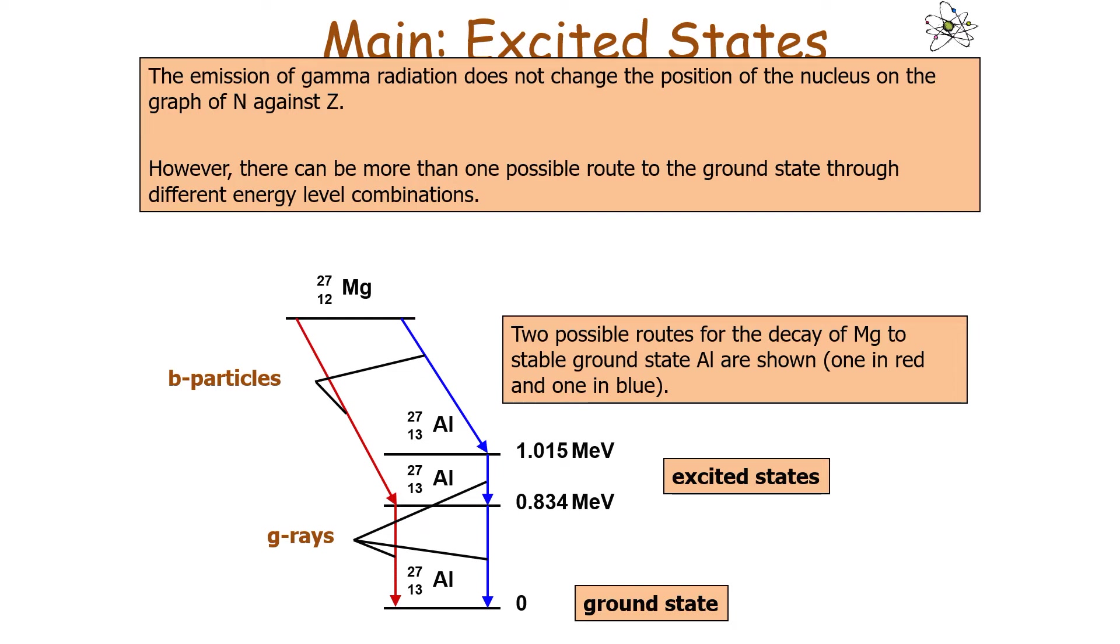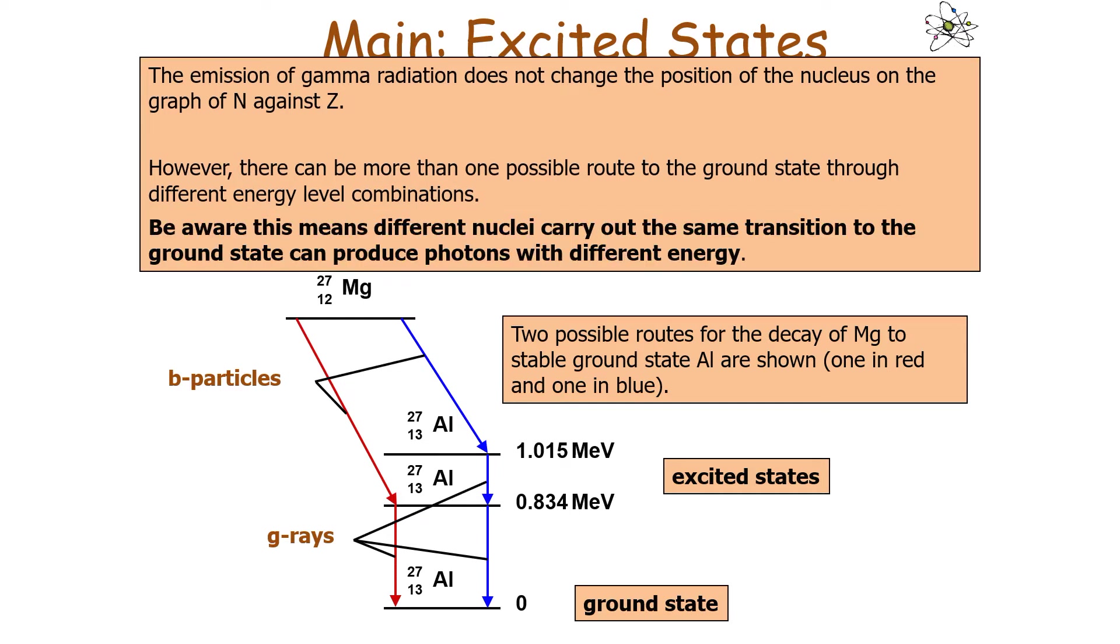However, there can be more than one possible route to the ground state through different energy level combinations. This means that different nuclei can carry out the same transition to the ground state but can produce photons with different energies. Our example here is the decay of magnesium into aluminum.